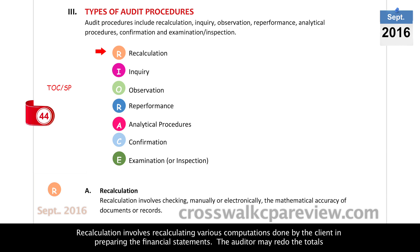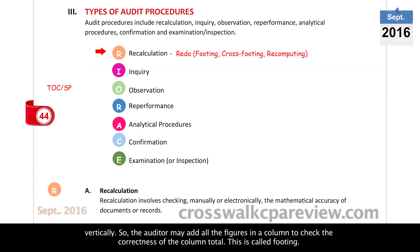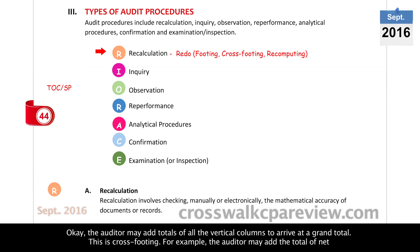Recalculation involves recalculating various computations done by the client in preparing the Financial Statement. The auditor may redo the totals vertically — adding all the figures in a column to check the correctness of the column total. This is called Putting. The auditor may also add totals of all the vertical columns to arrive at a grand total. This is called Cross Putting.